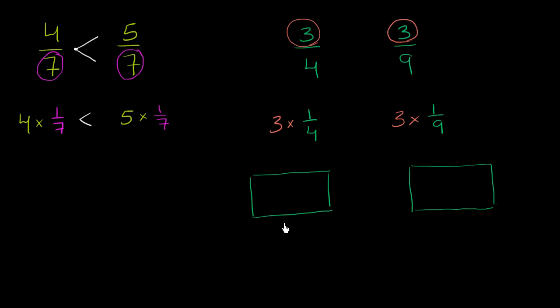So let's divide this into four equal sections. My best attempt to hand draw equal sections. So that's two equal sections. And then that looks pretty close to four equal sections. So that right over there is 1/4.